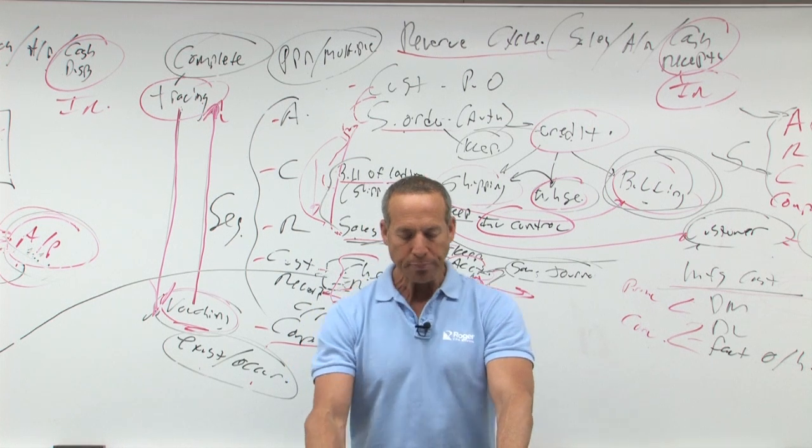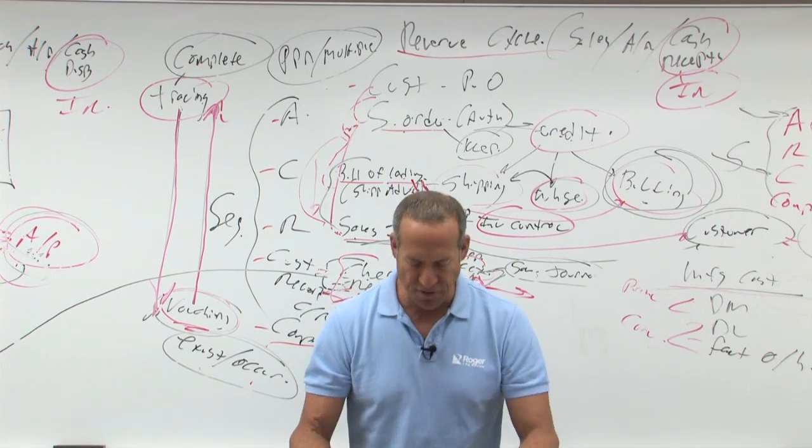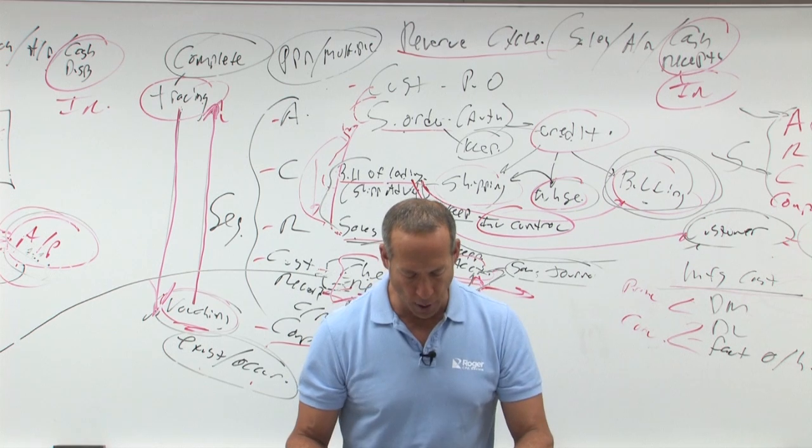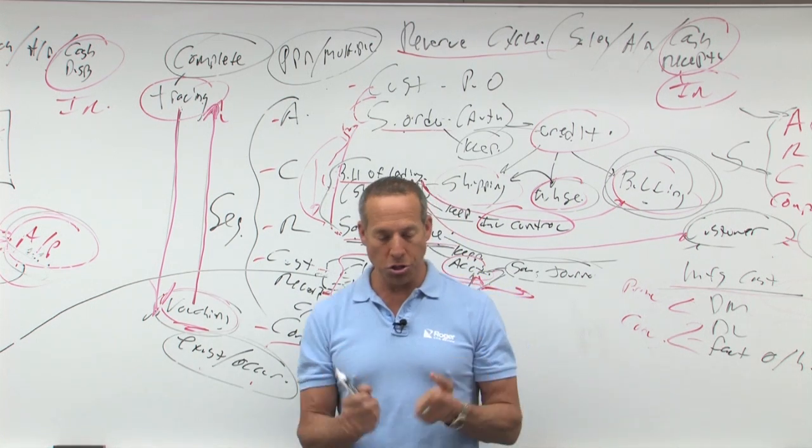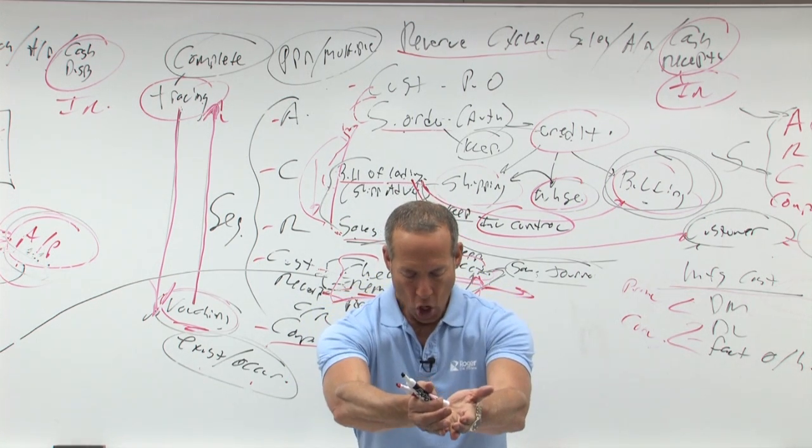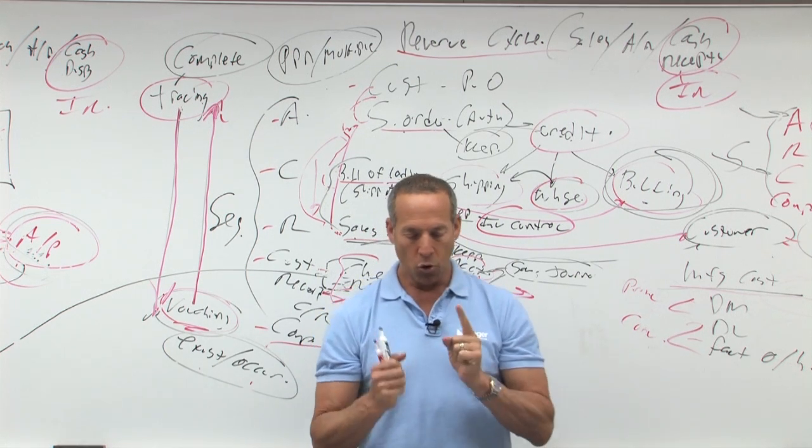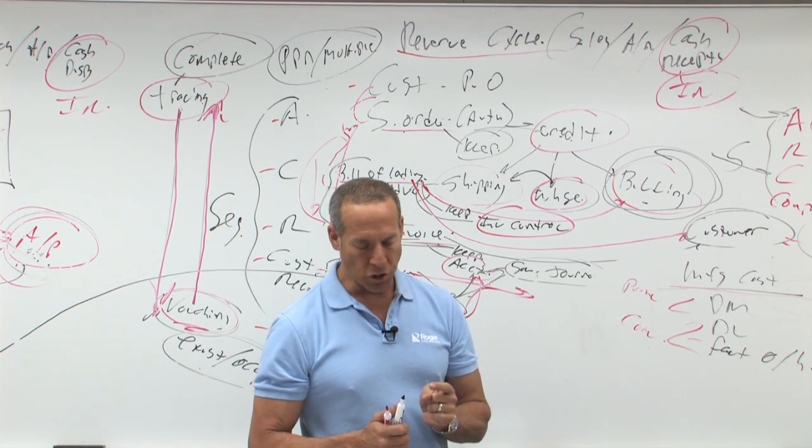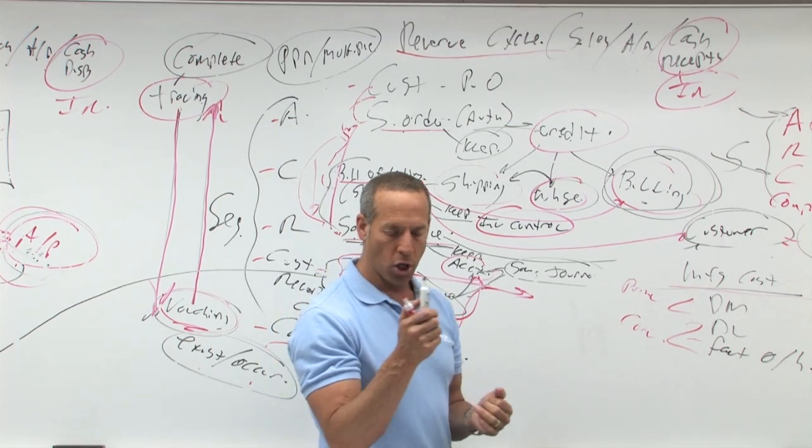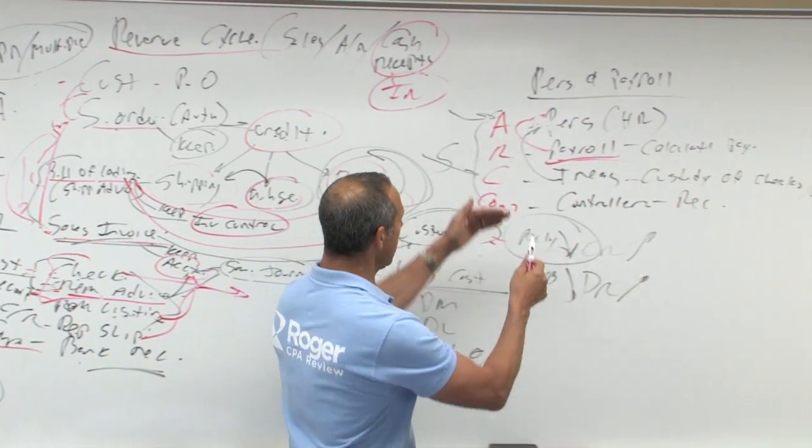Number 15. In meeting the control objectives of safeguarding of assets, which department should be responsible for, who's in charge of distributing the checks? Who's in charge of custody of unclaimed checks? Remember what we said, and the choices here are treasurer or payroll. So who has distributing the checks?